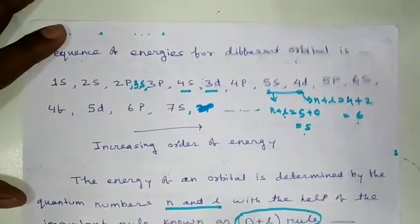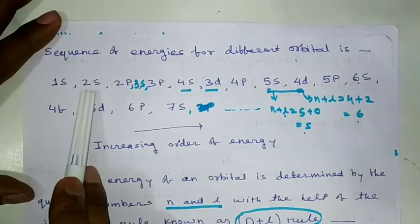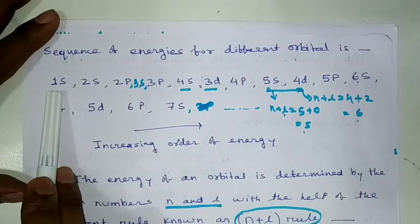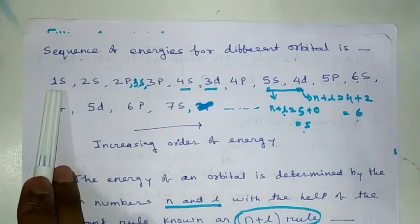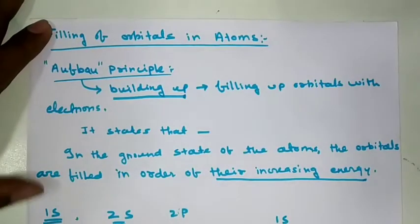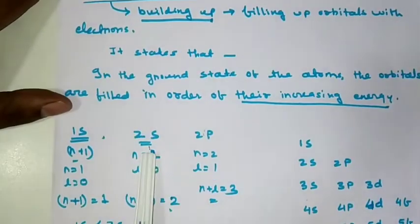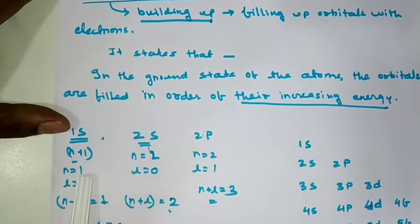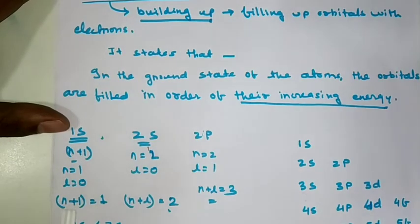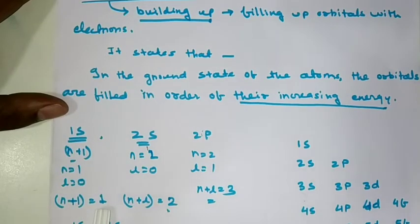This is the application of the N plus L rule. This is the 1s orbital and this is the 2s orbital. For the 1s orbital, N is equal to 1, and for the s orbital, L is equal to 0. So therefore, N plus L is equal to 1. That means the 1s orbital has an N plus L value of 1.